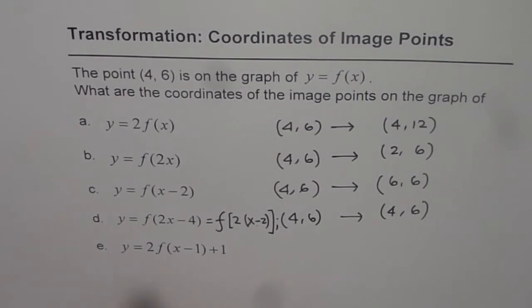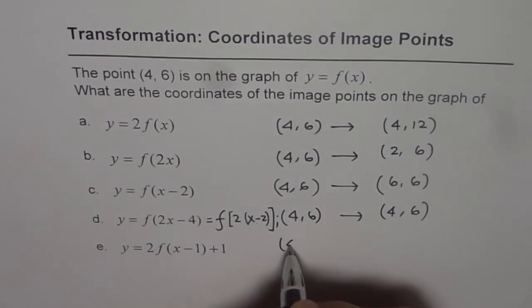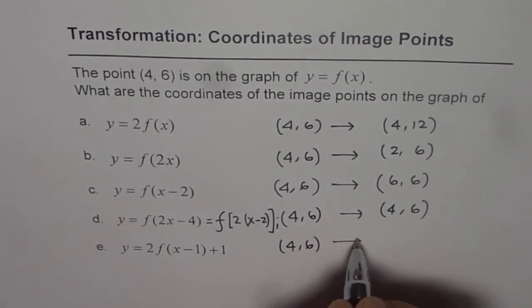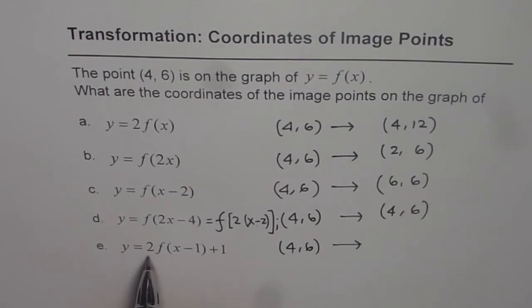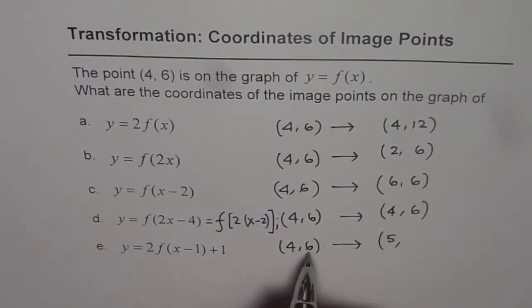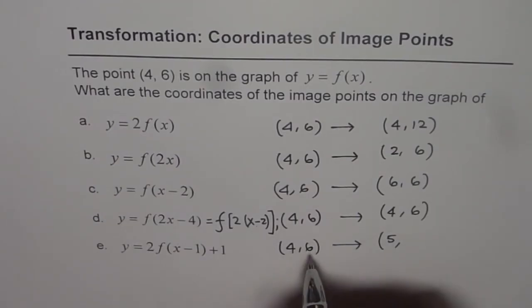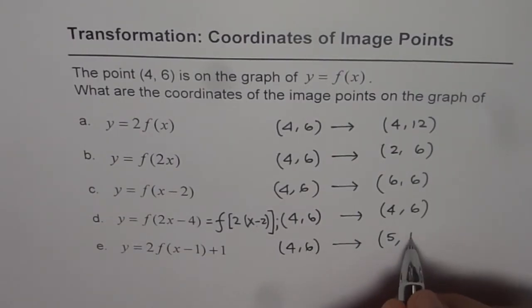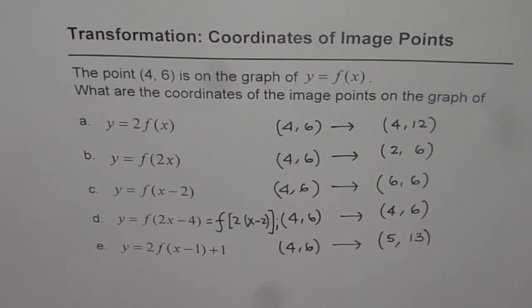In the next one, what happens? The original point is (4, 6). For y = 2f(x-1)+1, the y-values get multiplied by two and then you add one. For the x-values, you add one for the minus one inside. So adding one to four gives five. For the y-value, multiply by two and then add one: six times two is 12, plus one is 13. So it becomes (5, 13).